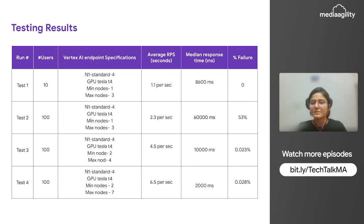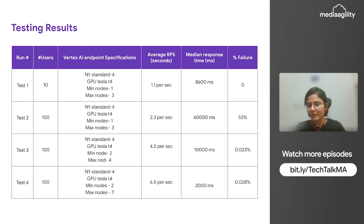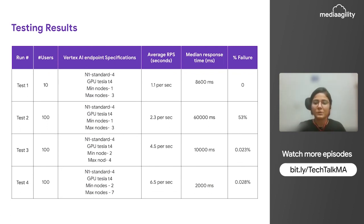Test case three: I tested 100 users with minimum nodes set to 2 and maximum nodes to 4. Here initially only 2 nodes are there, so I will get 2 requests per second. But as soon as the machine scales to 4 nodes, there will be 4 requests per second handled, and the median response time will also decrease with very less failure. The only failures will be before the scaling up, when nodes are still at 2. Similarly, I tried with maximum nodes to 7 and minimum nodes to 2. In that case the failure rate is the same, but the response time also decreased and our requests per second increased to nearly 6.5, as the load balancing is going to the 7 nodes.